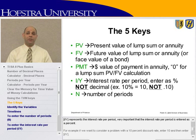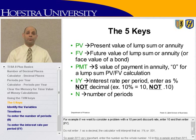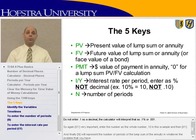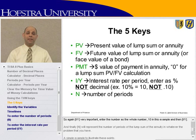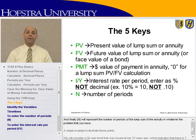I/Y represents the interest rate per period. It is very important that the interest rate per period is entered as a percent. For example, if we want to consider a problem with a 10% discount rate, enter 10 — enter 1, 0, and then I/Y. Do not enter .1. If you enter .1 as a decimal, the calculator will interpret that as .1% or .001. So again, I/Y is very important: enter the number as a whole number, 10 in this example, and then I/Y. Finally, N will represent the number of periods in the lump sum, in the annuity, or whatever problem you have.